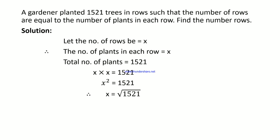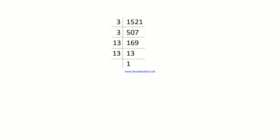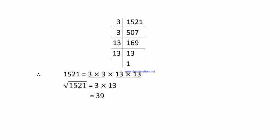Find the prime factorization of 1521 first. The prime factorization of 1521 is 3 × 3 × 13 × 13. Taking one factor from each pair, the square root of 1521 is 3 × 13 = 39. So, the total number of rows is equal to 39.